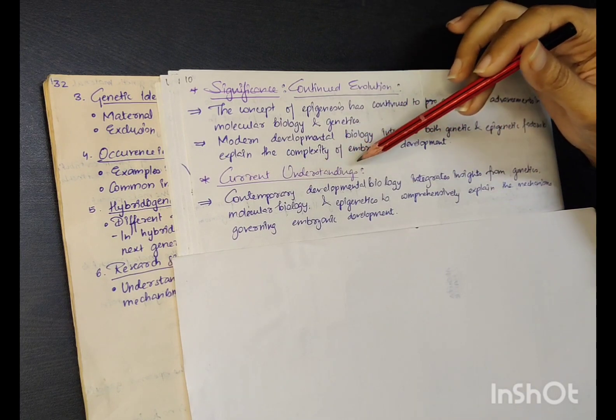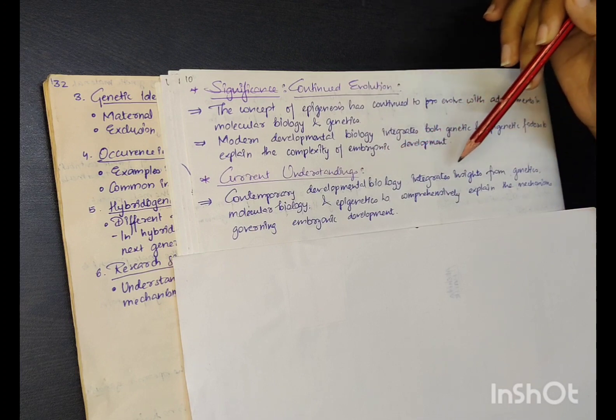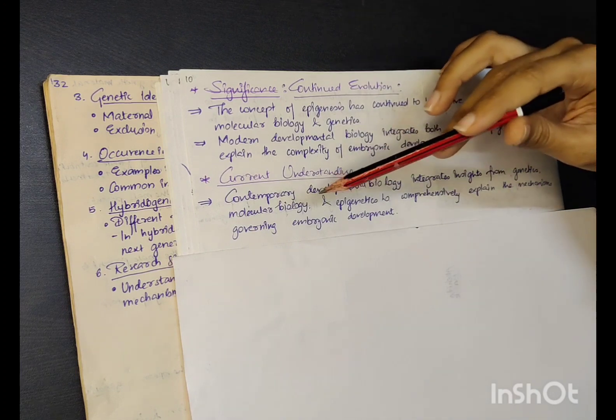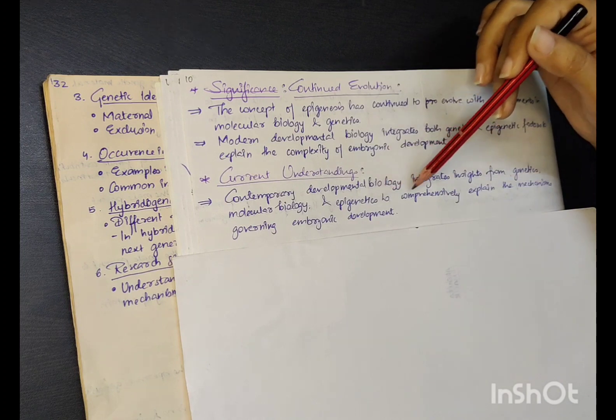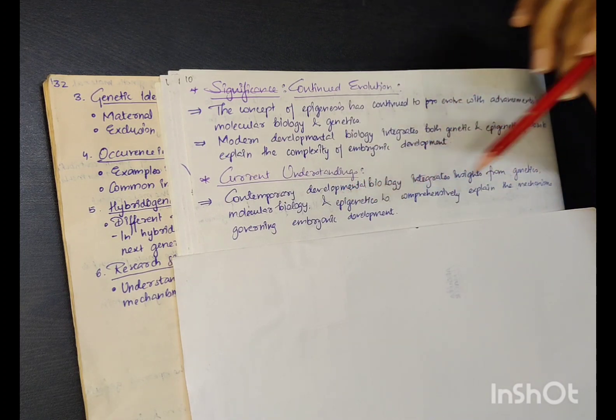Current understandings: Contemporary developmental biology integrates insights from genetics, molecular biology, and epigenetics to comprehensively explain the mechanisms governing embryonic development.